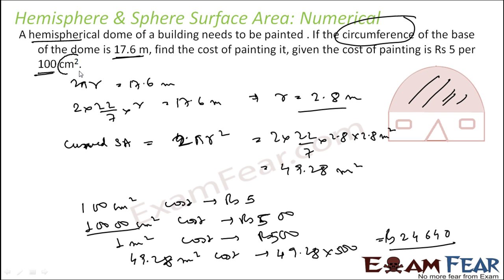Please pay attention: the cost was given in centimeter square while other units were in meters, so we had to take care of the units. The radius was not given directly — the circumference was given and from that we found the radius first. Once we knew the radius, since only the curved surface area needs to be painted, we used 2πr² and then accounted for the unit conversion to find the total cost.